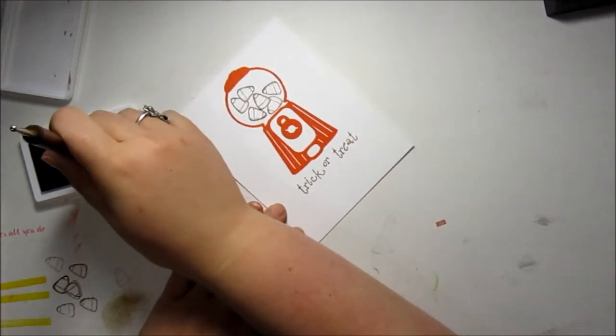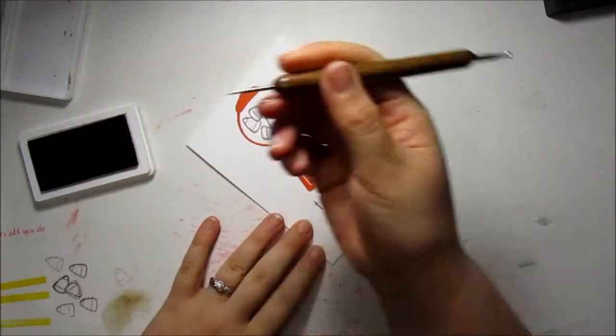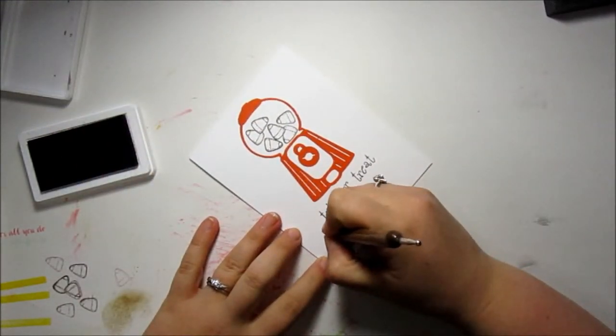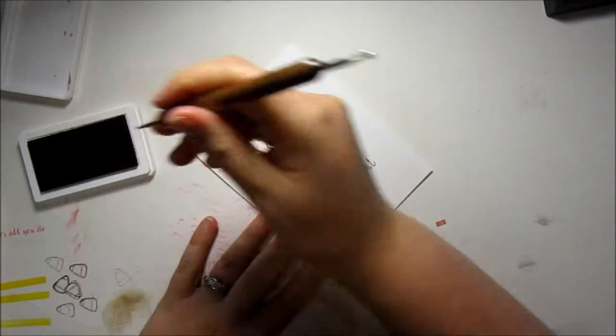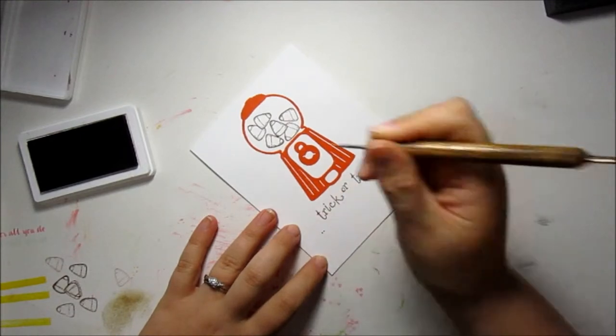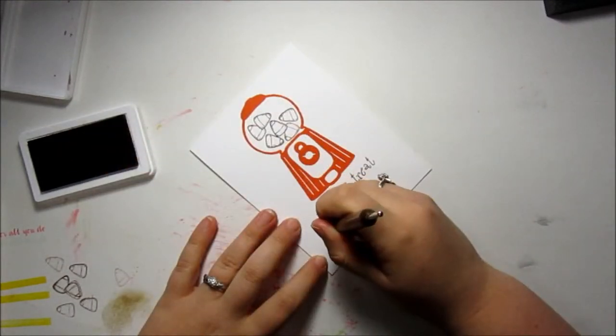I'm going to use the small end and I'm just going to touch it to my ink pad and then touch it down on my paper, and it'll create a little dot. I can keep repeating those dots and create a little dotted line.